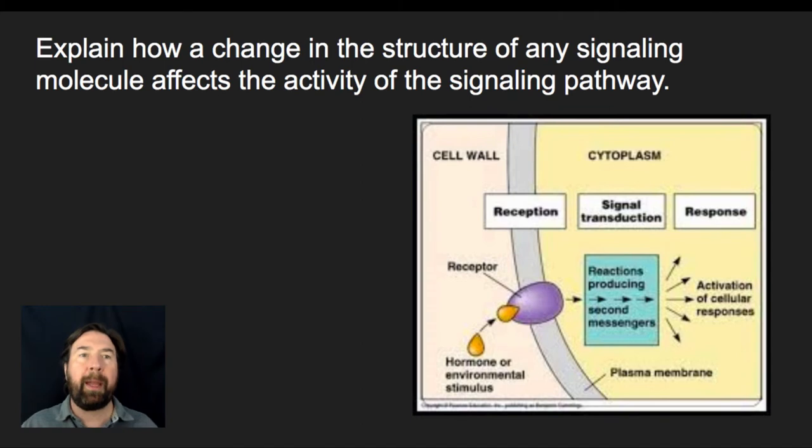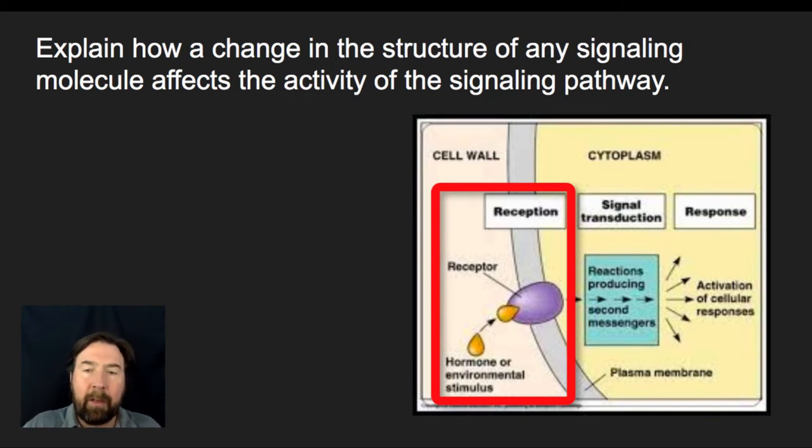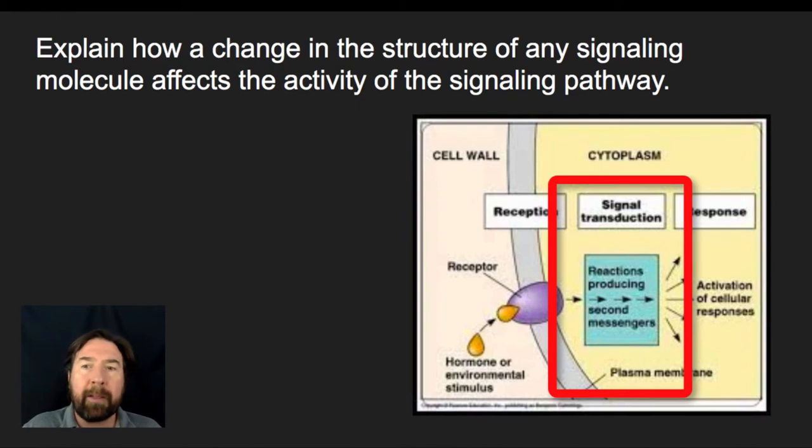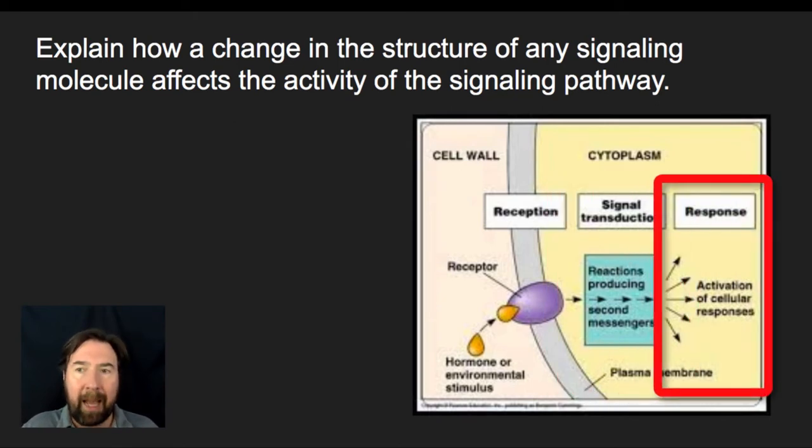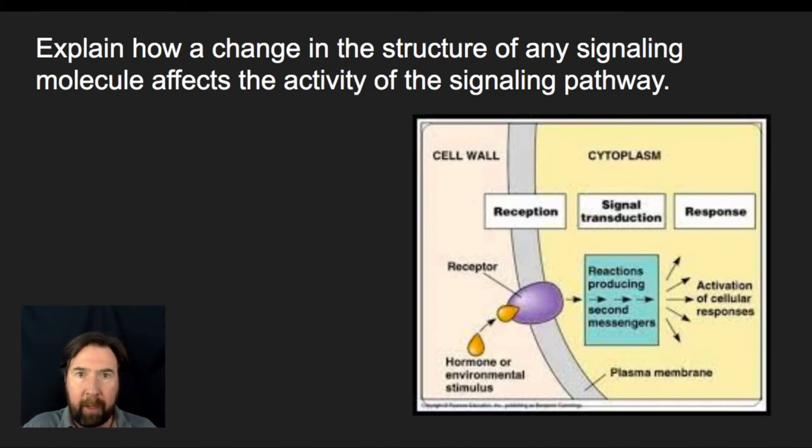First up, we're going to explain how a change in the structure of any signaling molecule affects the activity of the signaling pathway. I'm going to start by just doing a quick review of our signal transduction pathway. A signal transduction pathway has three components: we have reception, and that is where a ligand or some sort of molecule binds to a receptor. After that reception, there is signal transduction, that means there's a series of reactions producing secondary messengers. The secondary messengers are going to be propagated within the cells. And then ultimately, this leads to a response within the cell, some sort of cellular activity.